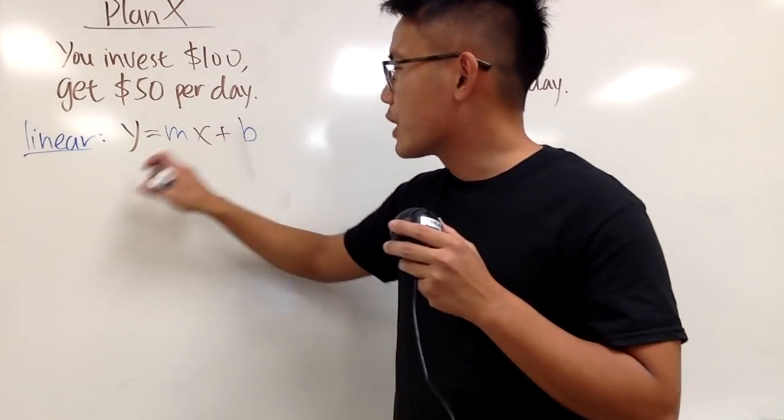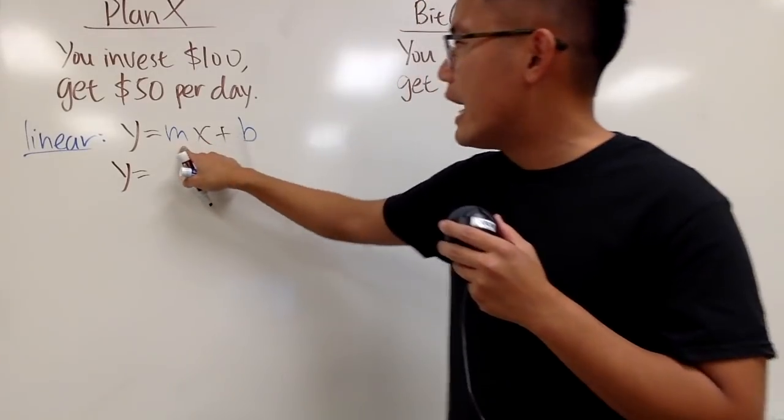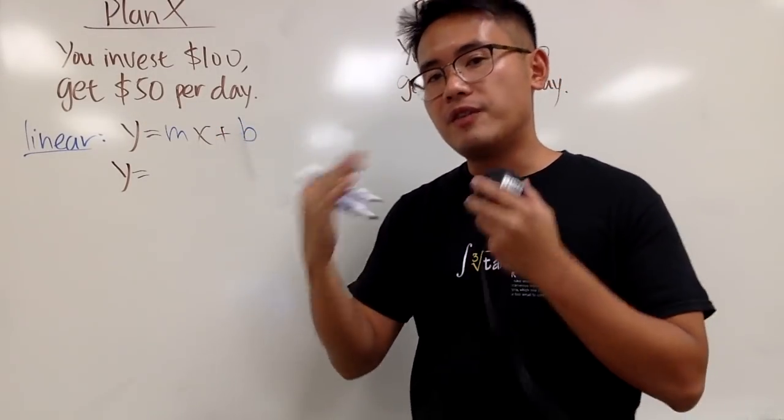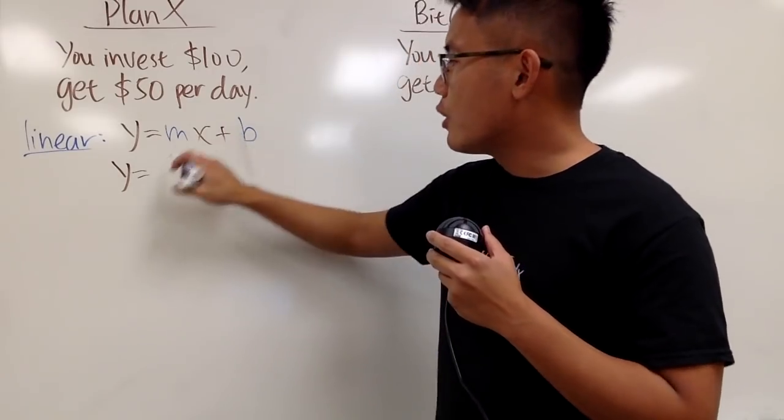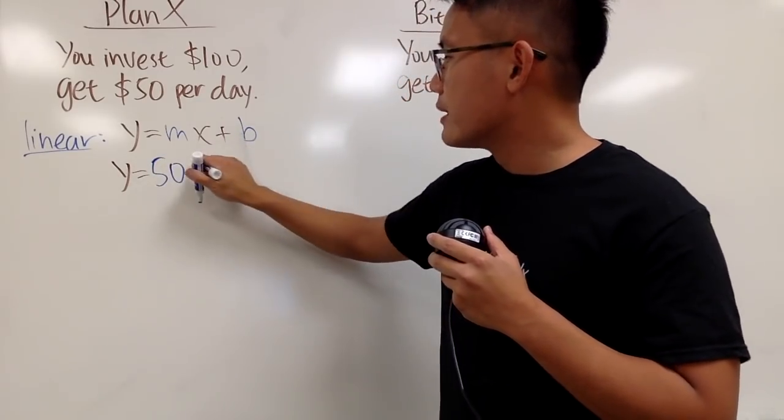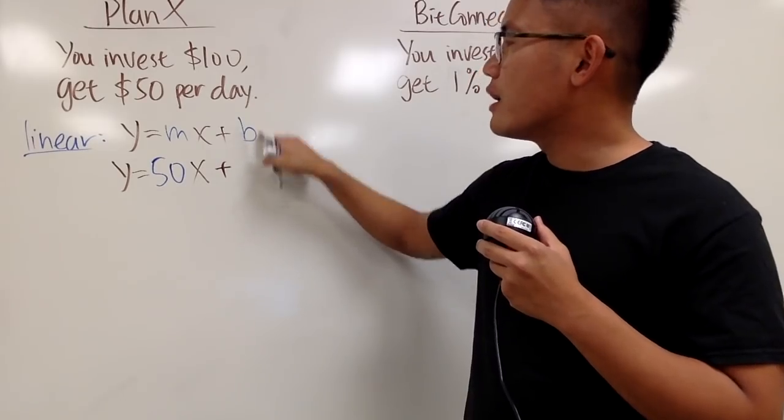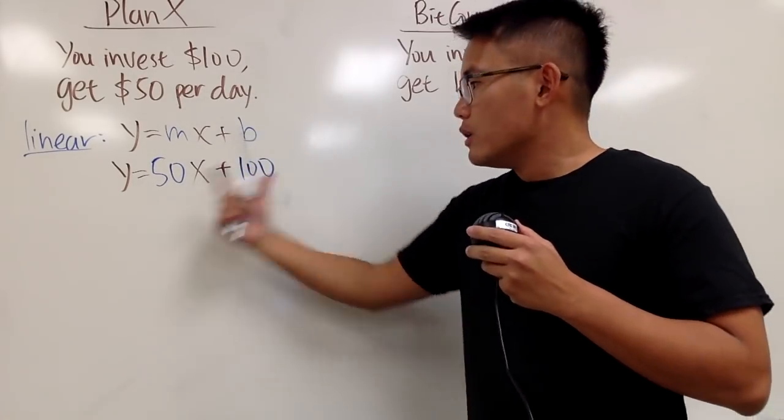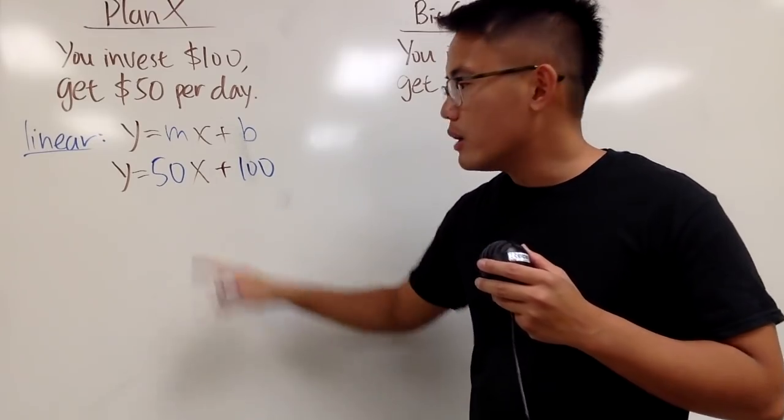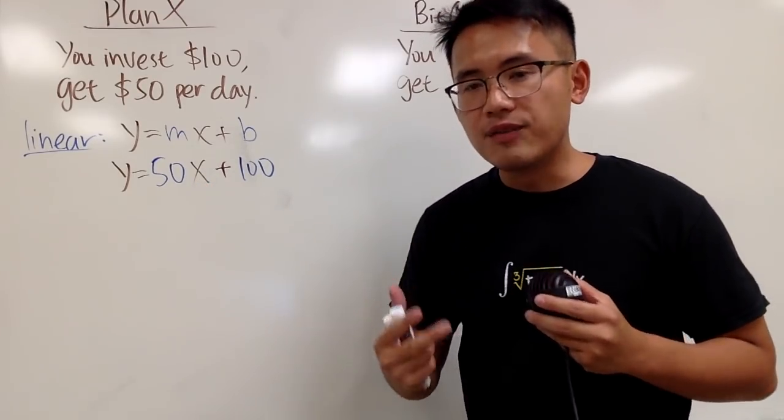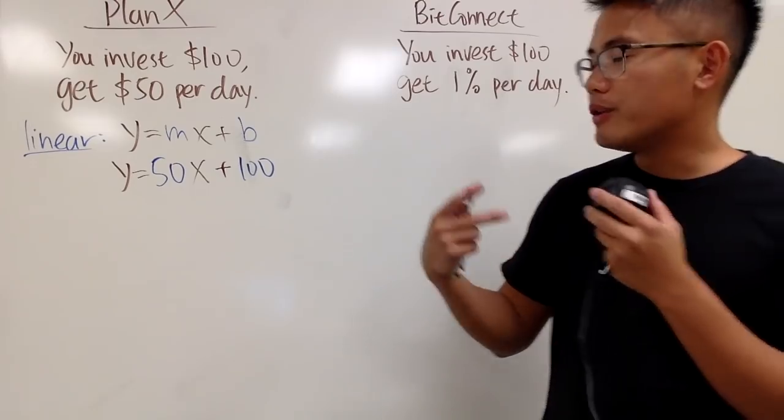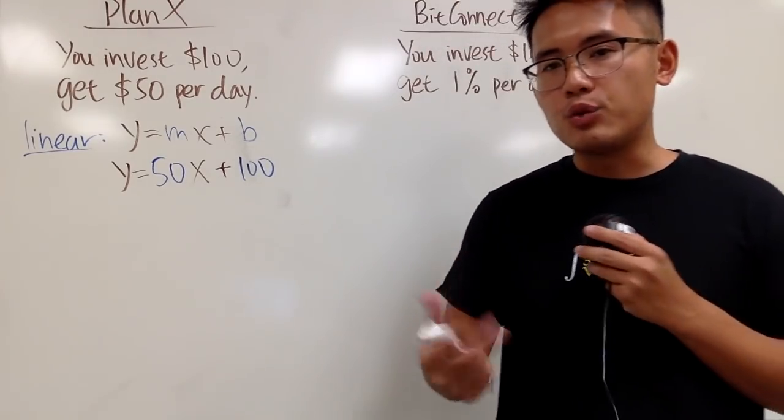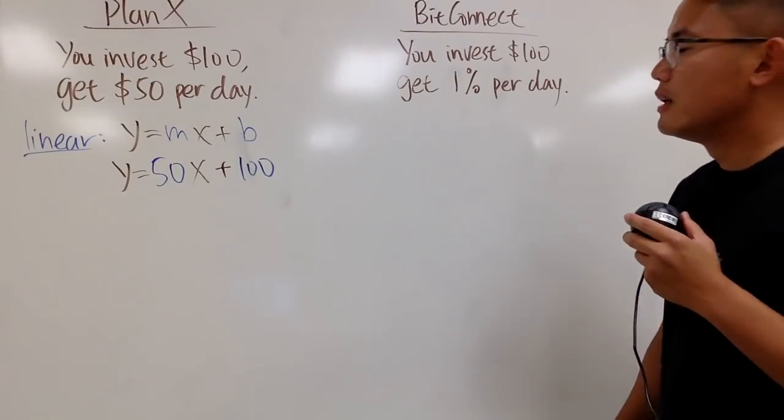And just like my T-series versus the PewDiePie video, m right here stands for the rate of change. And b right here stands for the beginning value, which is the 100 in this case. And we're going to assume that the m is going to be the same throughout these years, for these days. So the equation that we can write is y equal m, which is the 50, because this is the rate. It's $50 per day. So I'll put down 50 right here times x. And then plus b right here, it's a beginning value, which is 100.